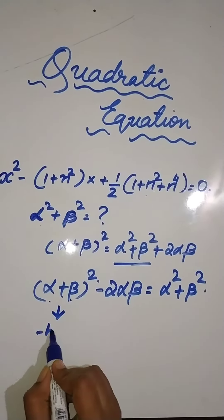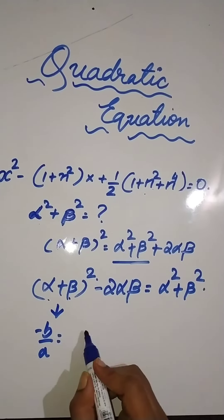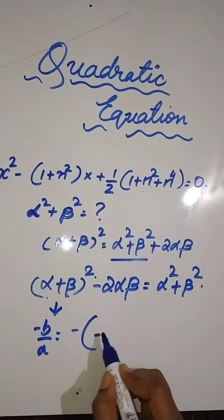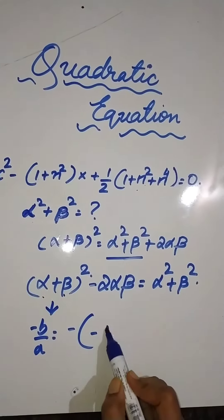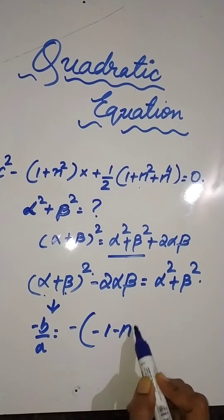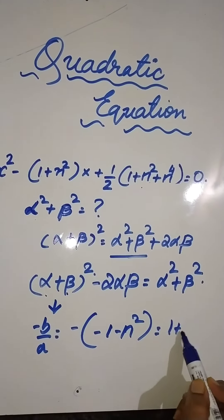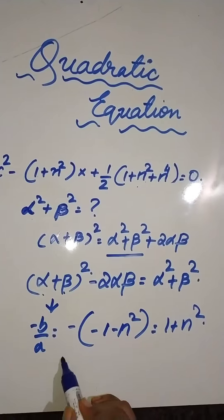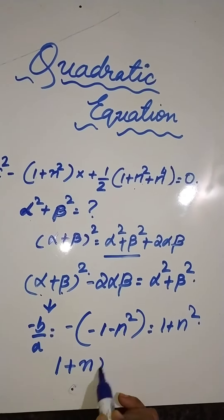α + β is equal to -b/a. So what is -b/a here? It is minus of (minus 1 minus n²), so it will become 1 + n². Now I have to square this first.